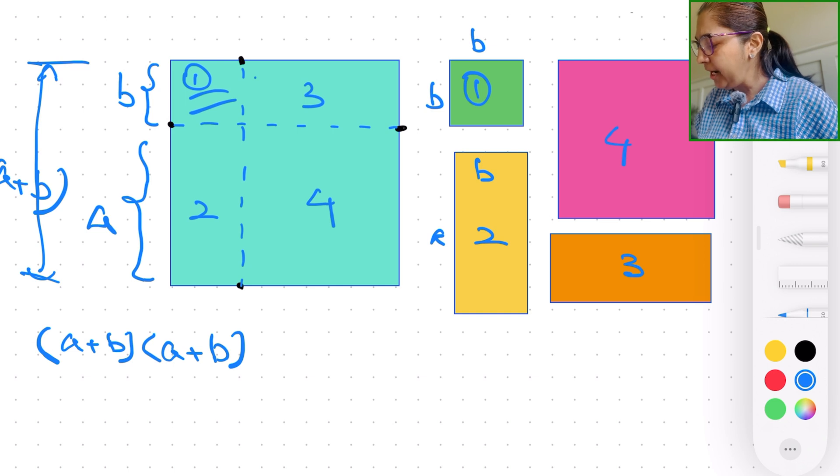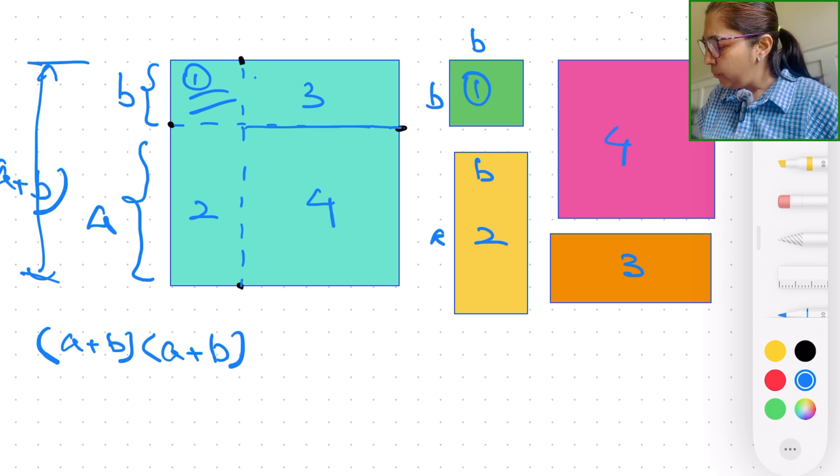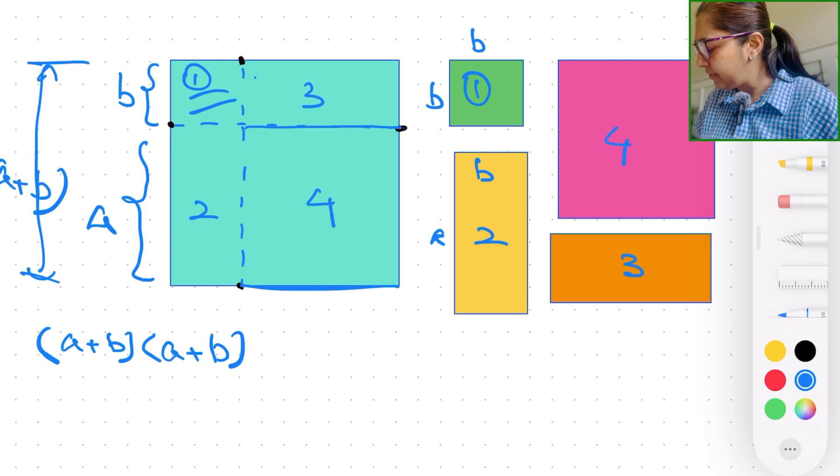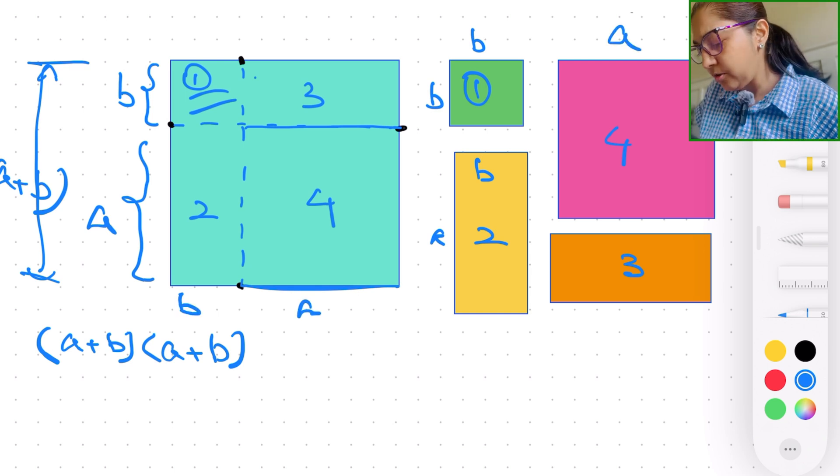What about the one in pink right here? This is going to be, we have this as if this is b and this is a. So this is going to be a. And this is also going to be a.